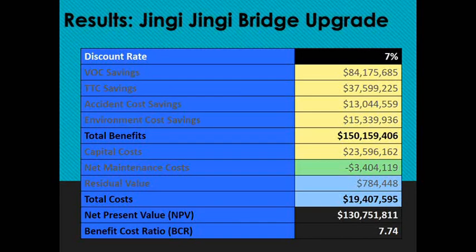Here are the results of the cost-benefit analysis of the Jiggy Jiggy Bridge upgrade. The majority of benefits come from vehicle operating cost savings, as heavy vehicles are very expensive to operate and a reduction in kilometres travelled produces substantial savings. There are also travel time savings from travelling a shorter distance, accident cost savings related to both shorter distance and higher road standard, and environmental cost savings linked to vehicle operating costs and fuel consumption — the additional fuel from travelling further produces significant emissions.